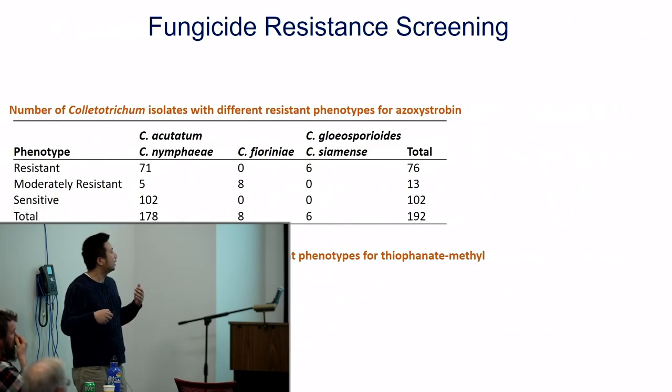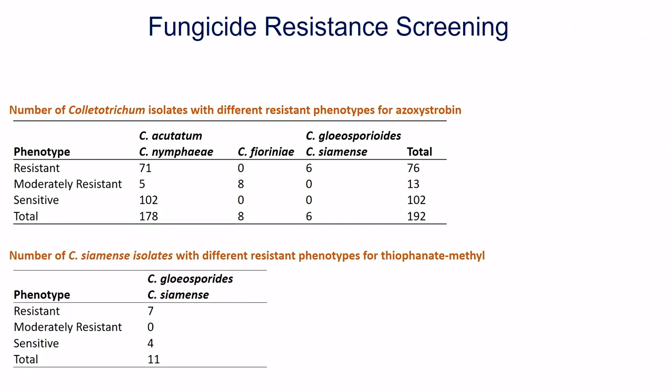Why does this matter? Why do we need to know about the species? We're interested in understanding fungicide resistance because we use fungicides to manage the disease and want to use effective materials. We tested resistance of those isolates to strobilurin fungicides — FRAC-11 — which is the primary chemical group for strawberry anthracnose, like Pristine and Cabrio. We found that 71 isolates out of 178 nymphaeae were resistant, and an additional 5 were moderately resistant.